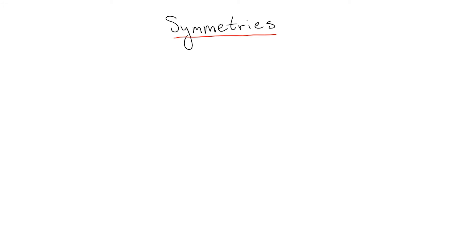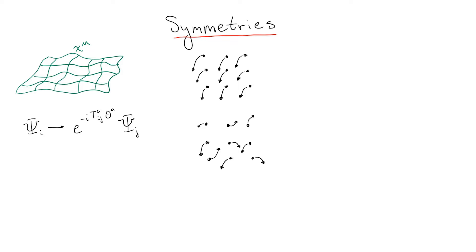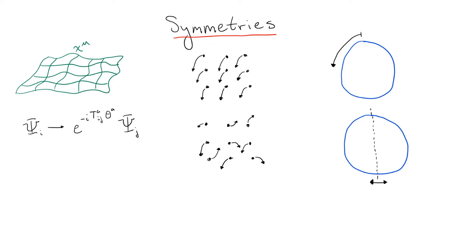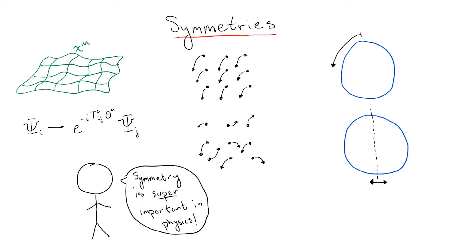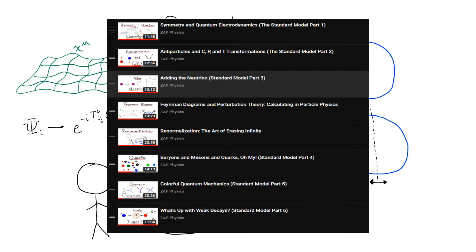Symmetries, whether they are spacetime or internal, global or local, continuous or discrete, are incredibly crucial to the study of physics. They not only make solving problems simpler, but their intimate connection to conservation laws can guide us towards theories of nature based on conserved quantities we observe. I've talked quite a bit in my Standard Model series about the importance of symmetries to our understanding of our universe.